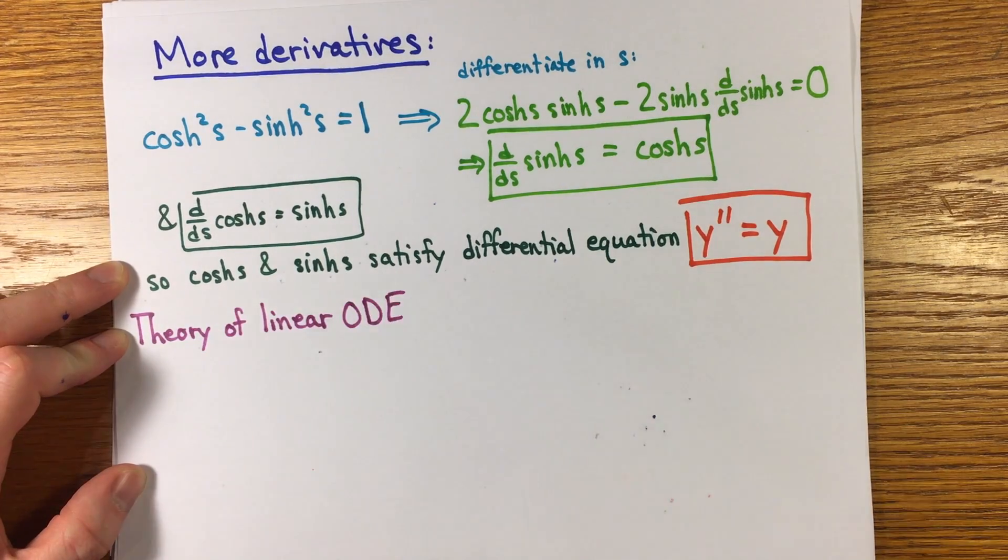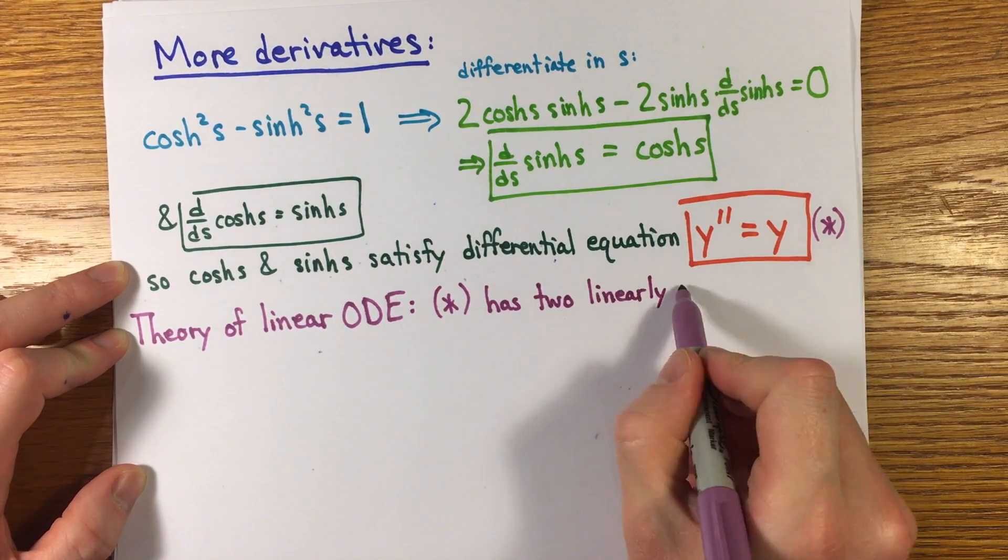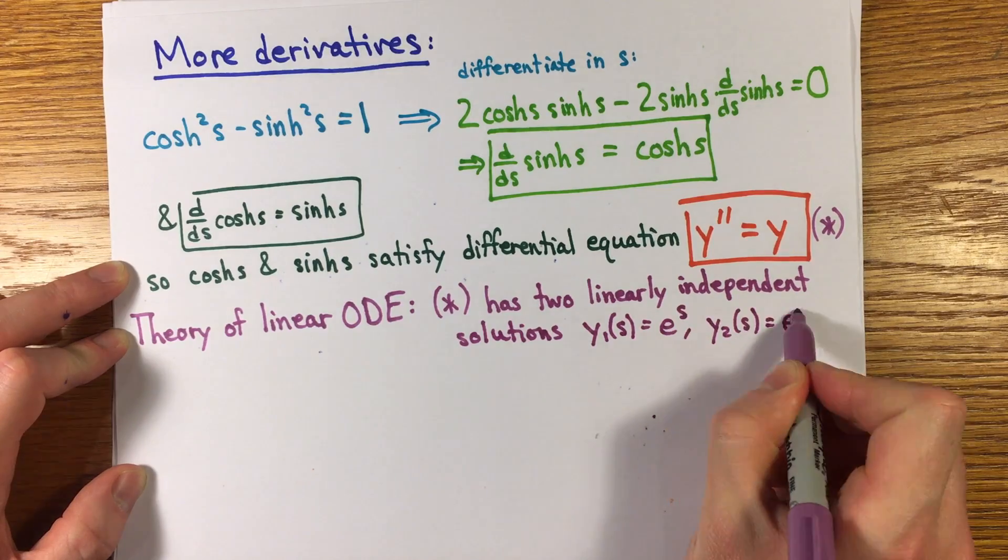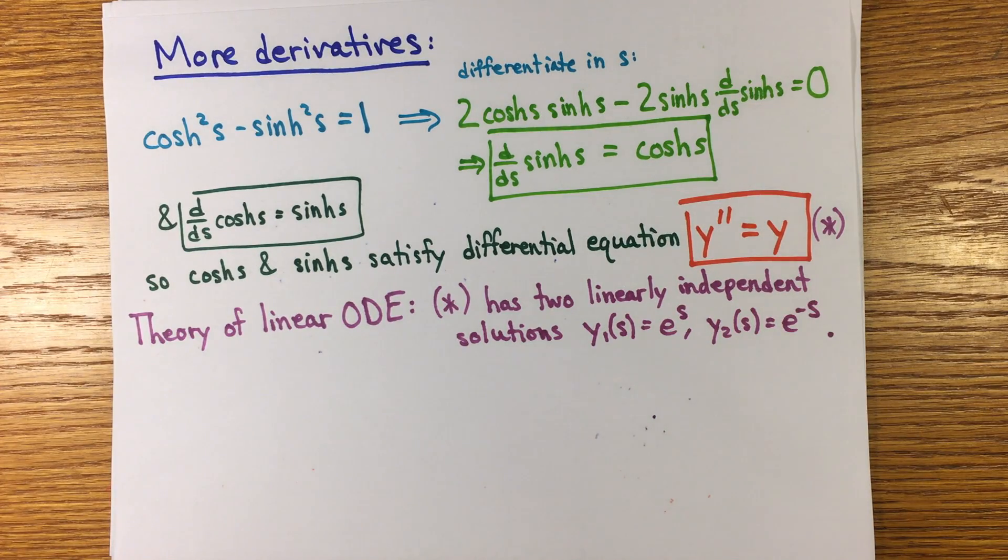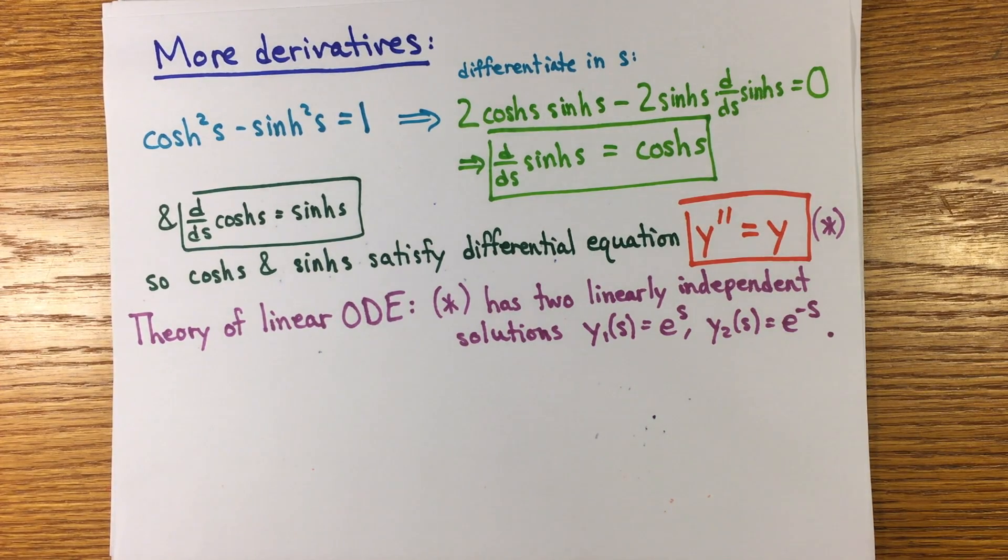From the theory of linear ordinary differential equations, this equation has two linearly independent solutions, e to the x and e to the minus x. With any solution being a linear combination of the two, the initial conditions for cosh and sinh imply that cosh x equals e to the x plus e to the minus x over two, and sinh x equals e to the x minus e to the minus x over two.